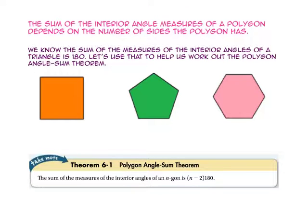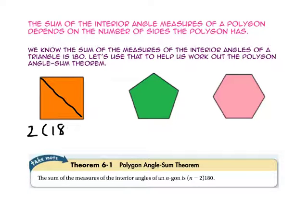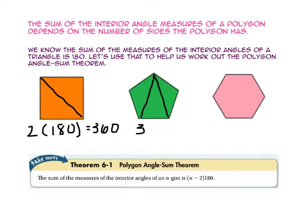Let's use that to help us work out the polygon angle sum theorem. The orange quadrilateral can be divided into two triangles with one diagonal. Since we know the sum of the interior angles of a triangle is 180, this sum will be 2 times 180, or 360. The green pentagon can be divided into three triangles with two diagonals, so the sum of the interior angles of the pentagon is 3 times 180, or 540.